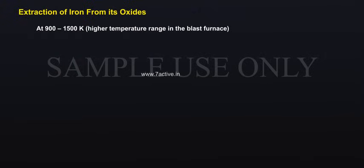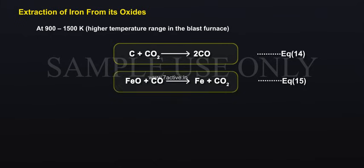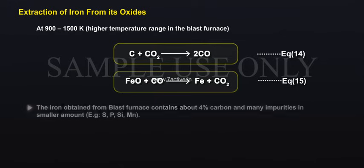At 900 to 1500 Kelvin, the higher temperature range in the blast furnace: C + CO₂ gives 2CO; Fe₃O₄ + CO gives FeO + CO₂. (Equation 15) The iron obtained from the blast furnace contains about 4% carbon and many impurities in small amounts.